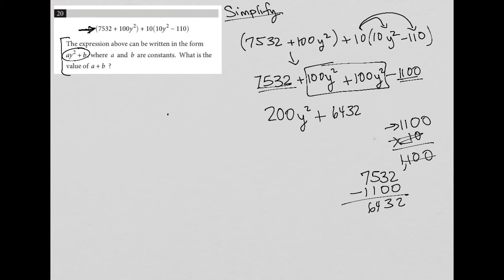The question said that I should be able to get to an ay² + b form, which I have. In this case, the 200 is the a, and the 6432 is the b part of this format. The question, however, wants me to find the answer to the value of a + b.